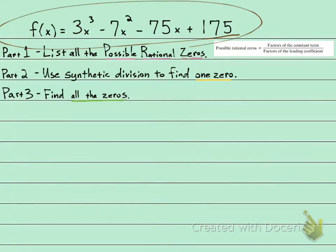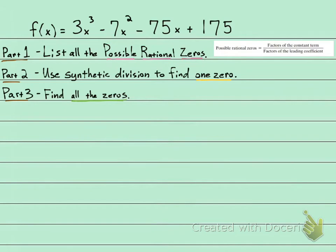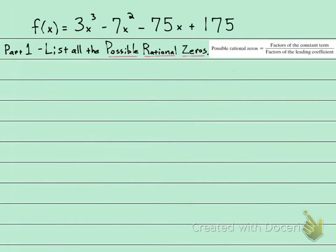This polynomial function has three zeros — three real zeros — and I'm going to find them. I'm going to work this problem in three parts, and the first part is asking me to list all of the possible rational zeros. So let's do that first.